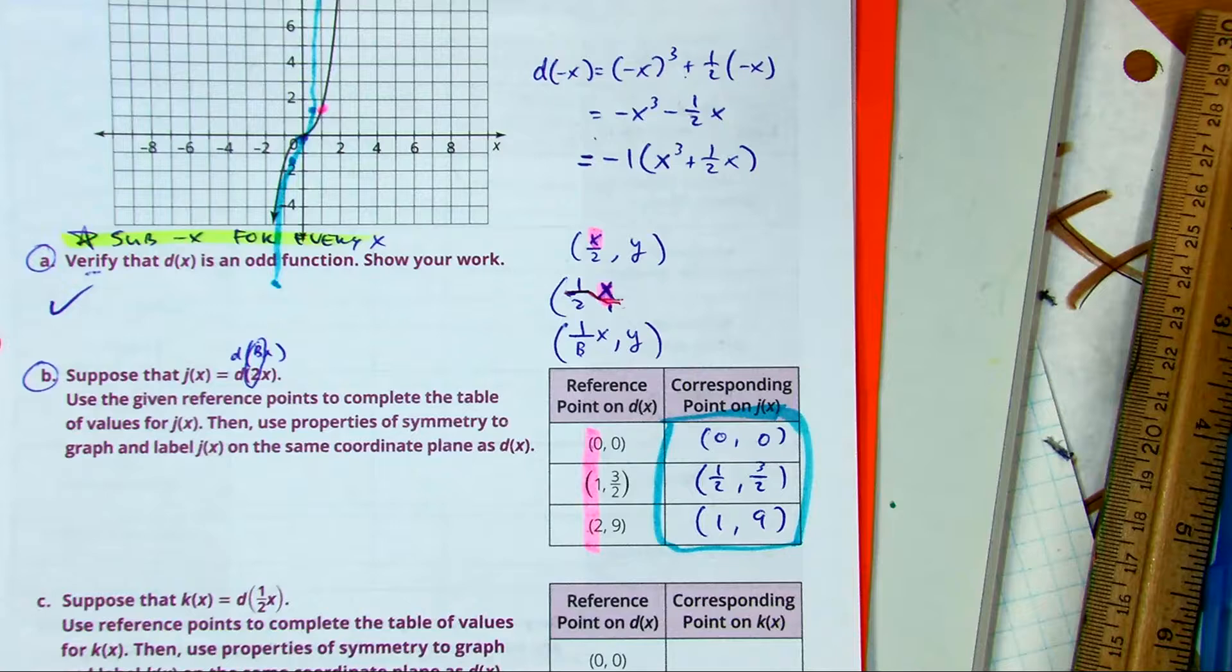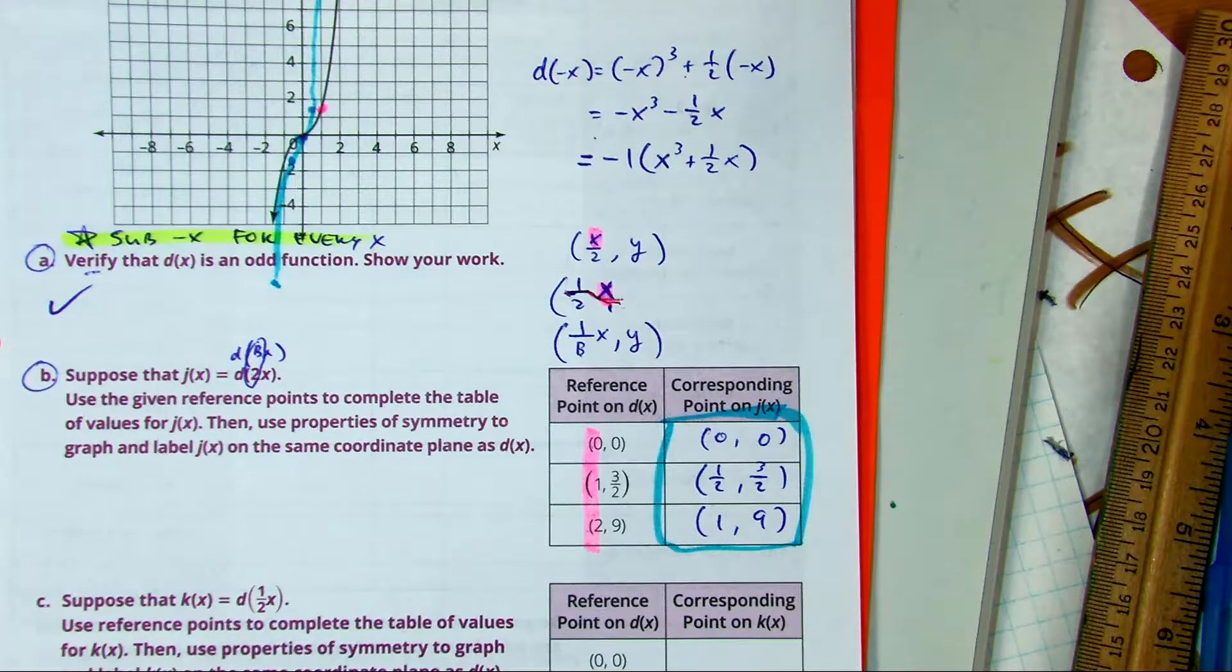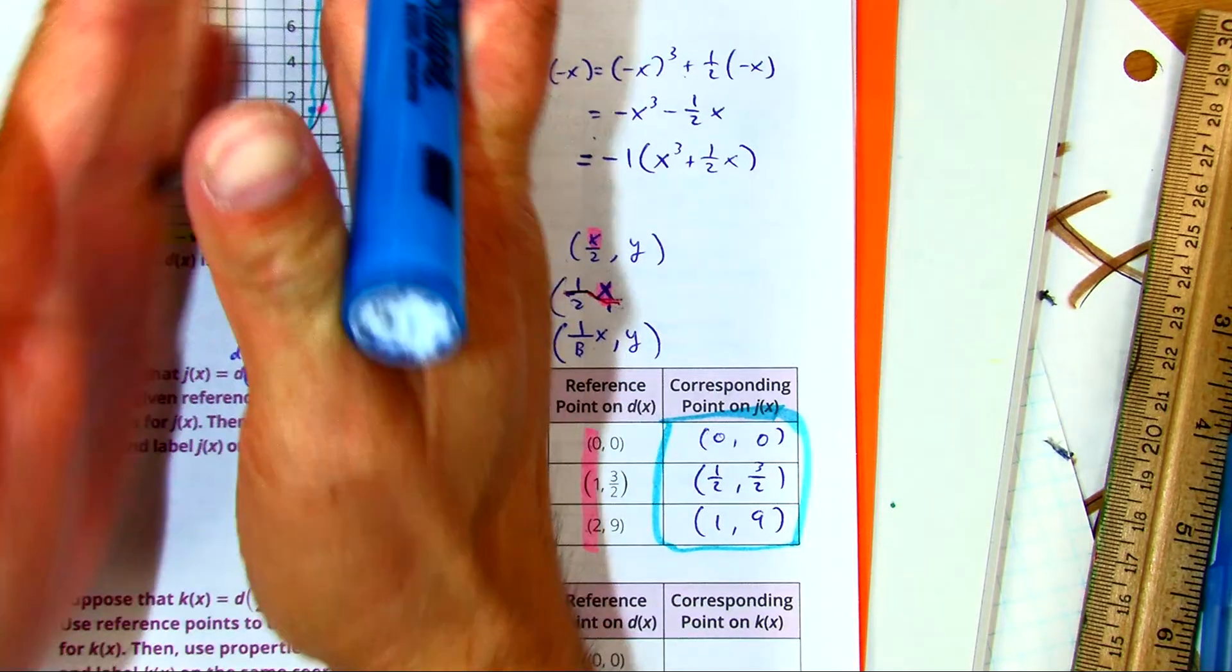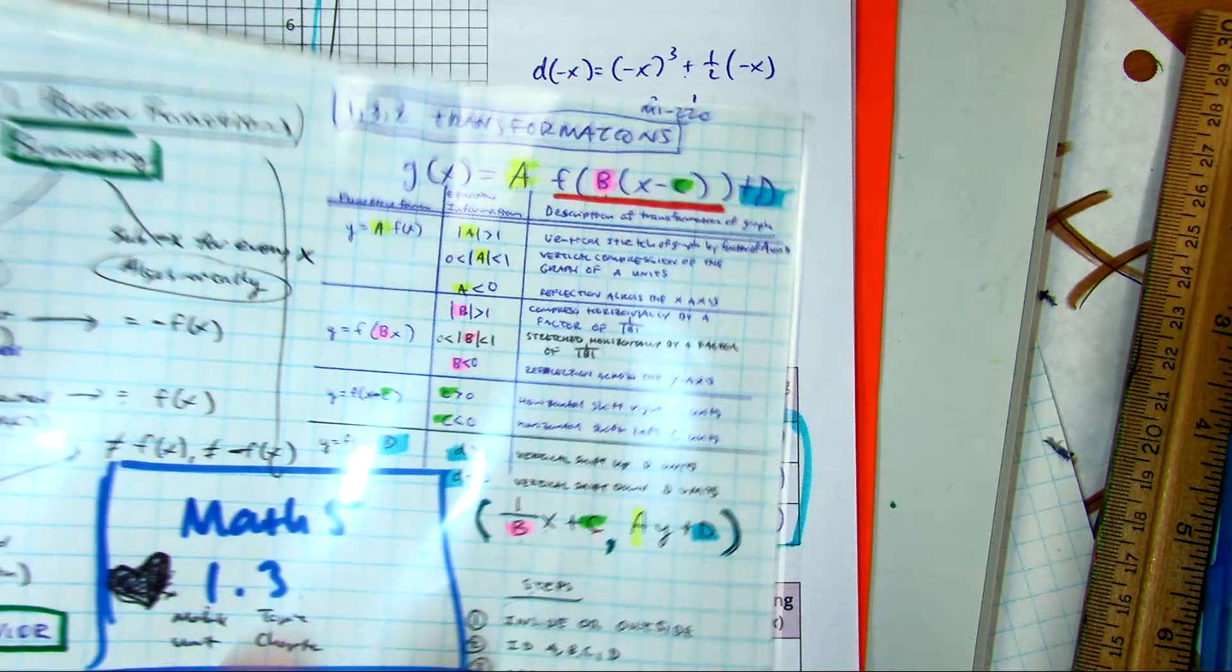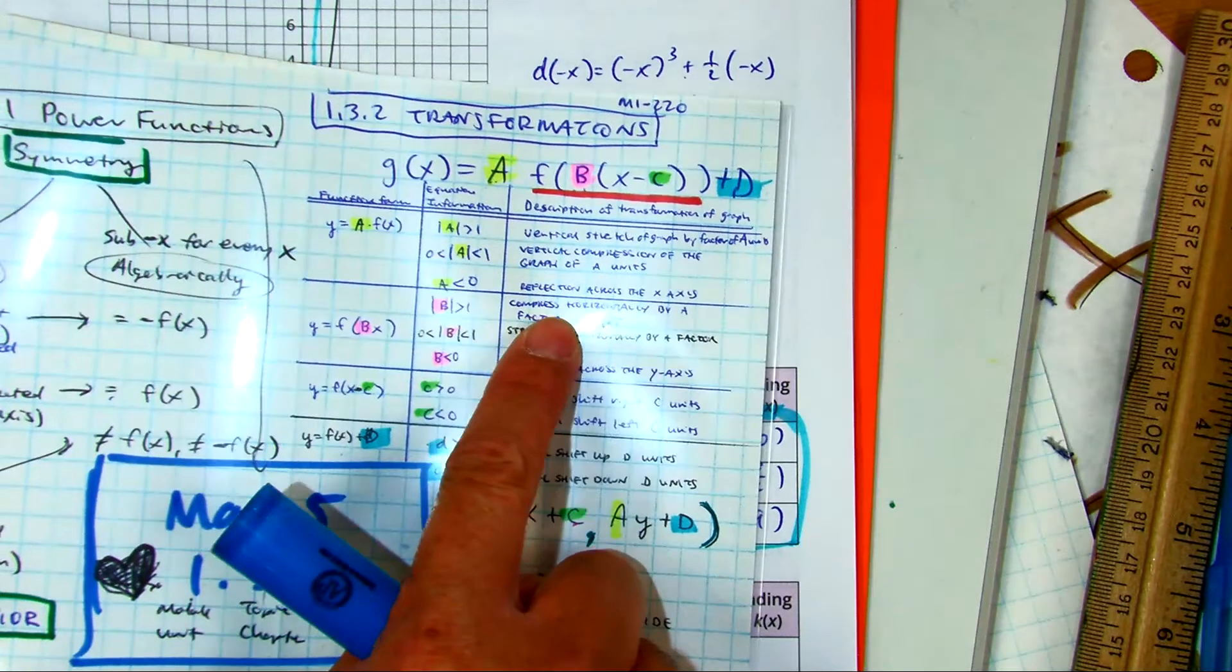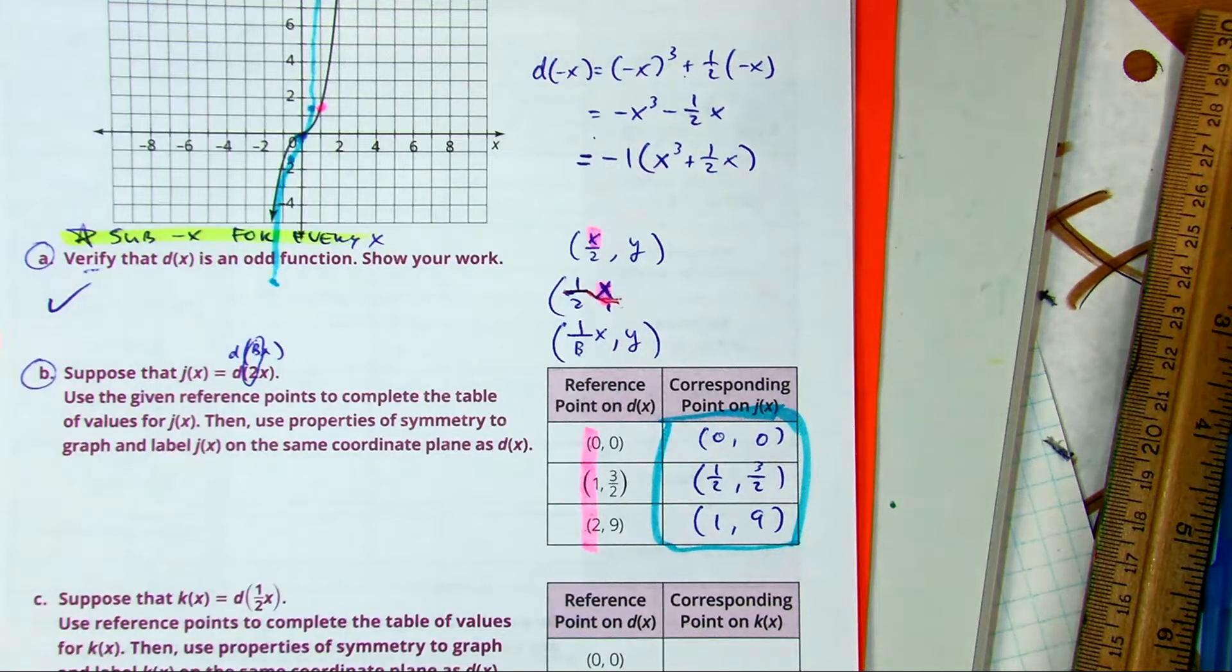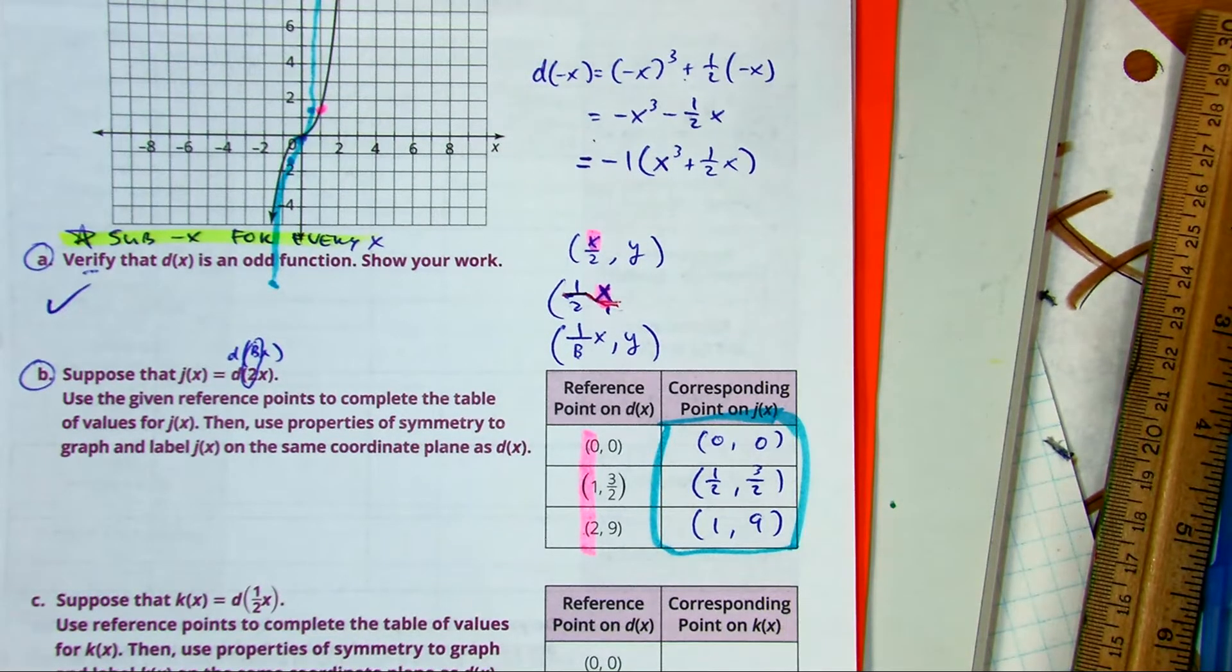Class, what happened to our graph? There was a, B is a horizontal compression. That's what was happening. It's being compressed by that. That's what was happening.